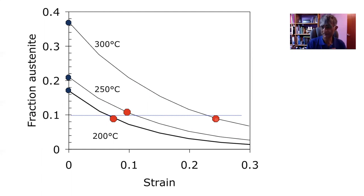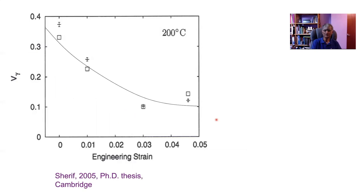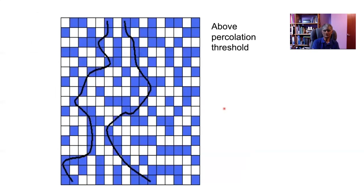This is the fraction of austenite at the beginning before any plastic strain, and this is a calculated curve showing how the austenite should decompose during tensile deformation. What happens is that when the amount of austenite decreases to about 0.1 — that means 10% — you get failure. So these red points identify tensile failure. We did a tensile test using neutron diffraction to follow the amount of austenite as a function of strain, and again you get failure when you reach a volume fraction of austenite of about 0.1.